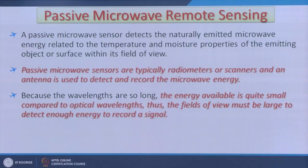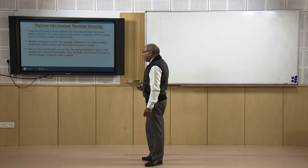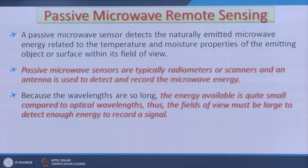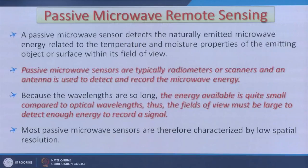In order to get sufficient energy to reach the satellite, a large area was involved, meaning a compromise on spatial resolution. That is why sensors like SSMI and SSMR in the passive microwave region had relatively very poor spatial resolution — about 30 kilometers. Because of the less energy available to the sensor, passive microwave never became that popular. Most passive microwave sensors are characterized by low spatial resolution, and that became a problem.